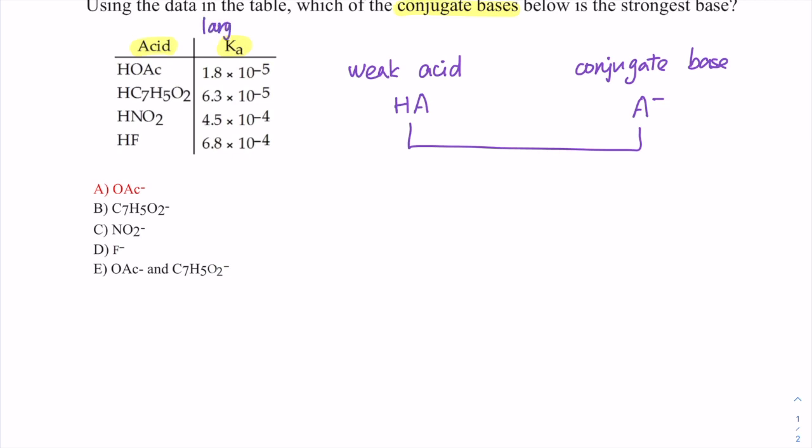That's the first relationship - how we can use the given Ka value to determine the acid's strength and do comparisons. Now the question is asking us about their conjugate base. So how are the weak acid and their conjugate base related? We need to bring in Ka and Kb and their relationship.